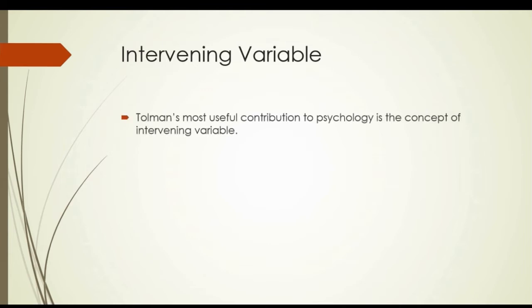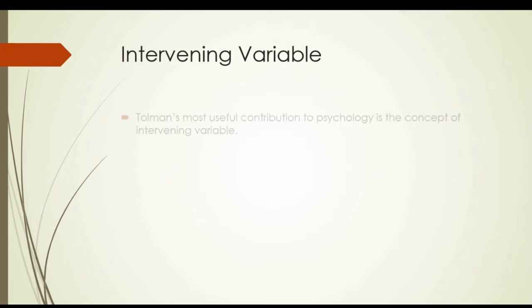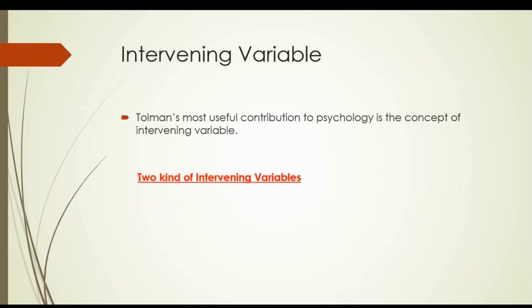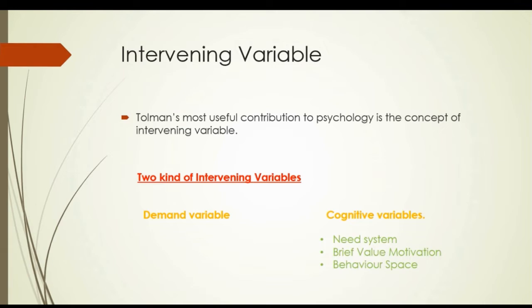In 1951, Tolman revised his intervening variables and established three categories: 1. Need system — psychological deprivation; 2. Belief-value motive — to represent the intensity of preference for certain goal objects; 3. Behavior spaces — in which some objects attract and some repel, and which one can observe and operationally assess as the intervening cause of behavior.